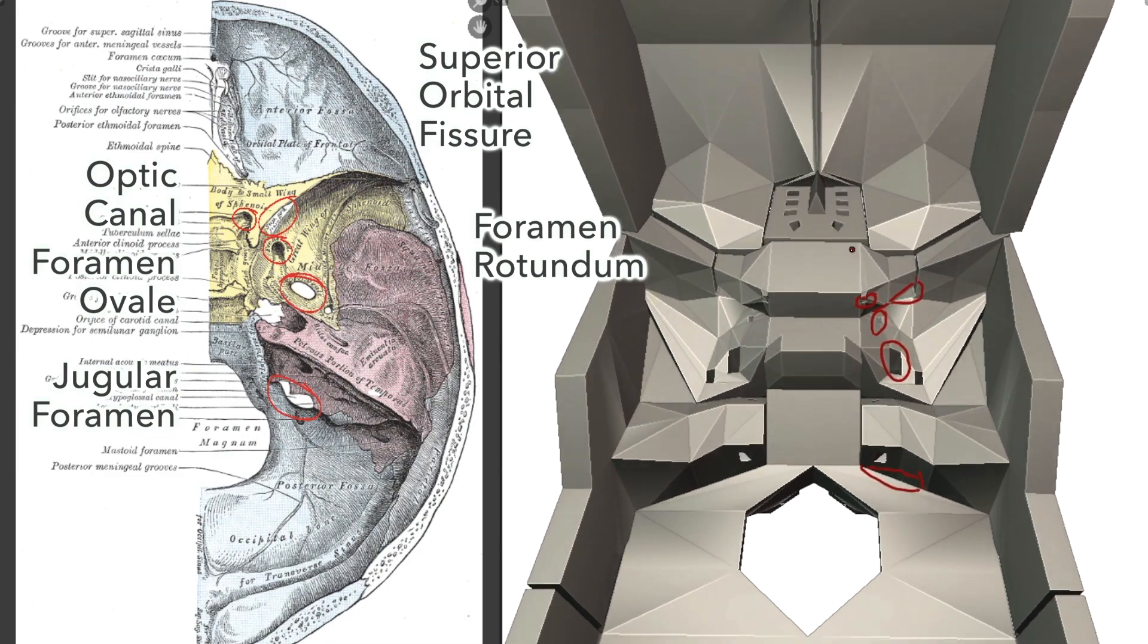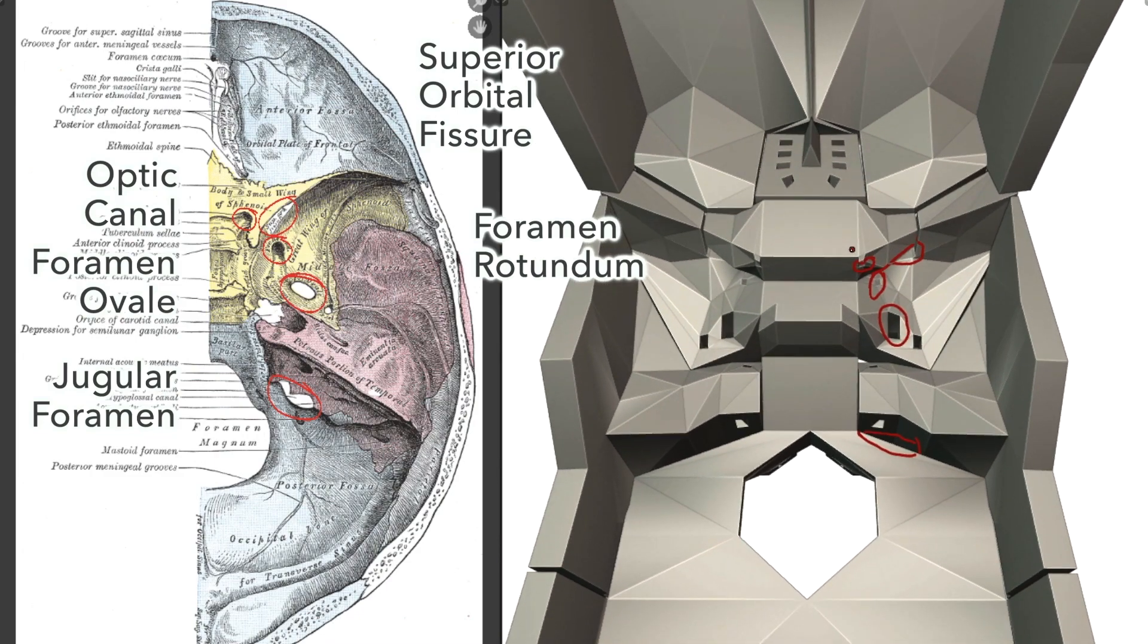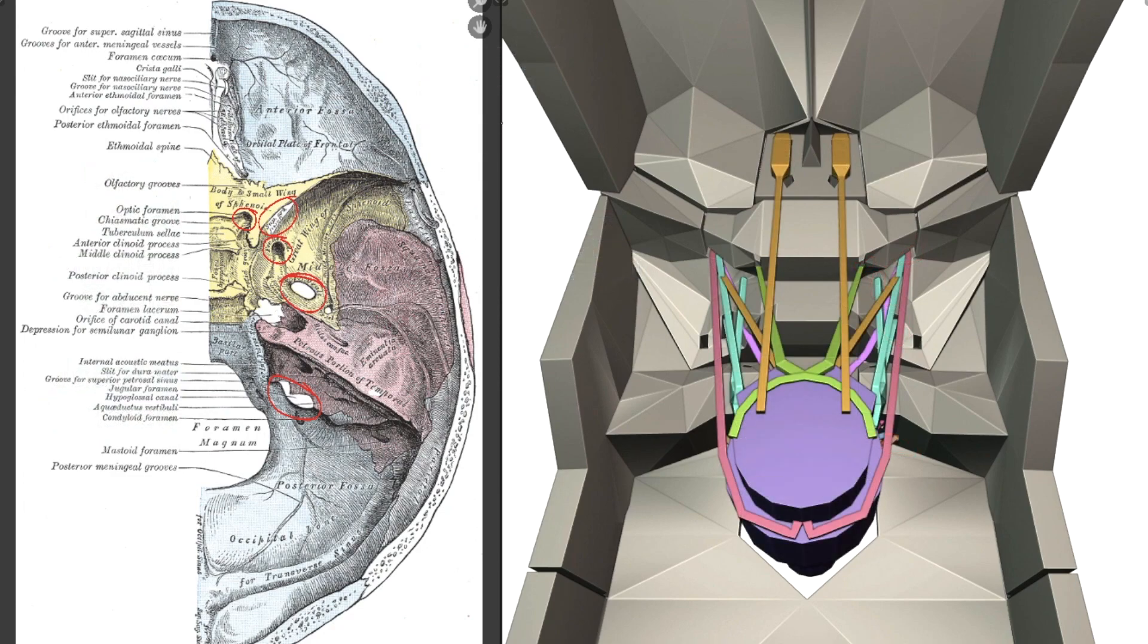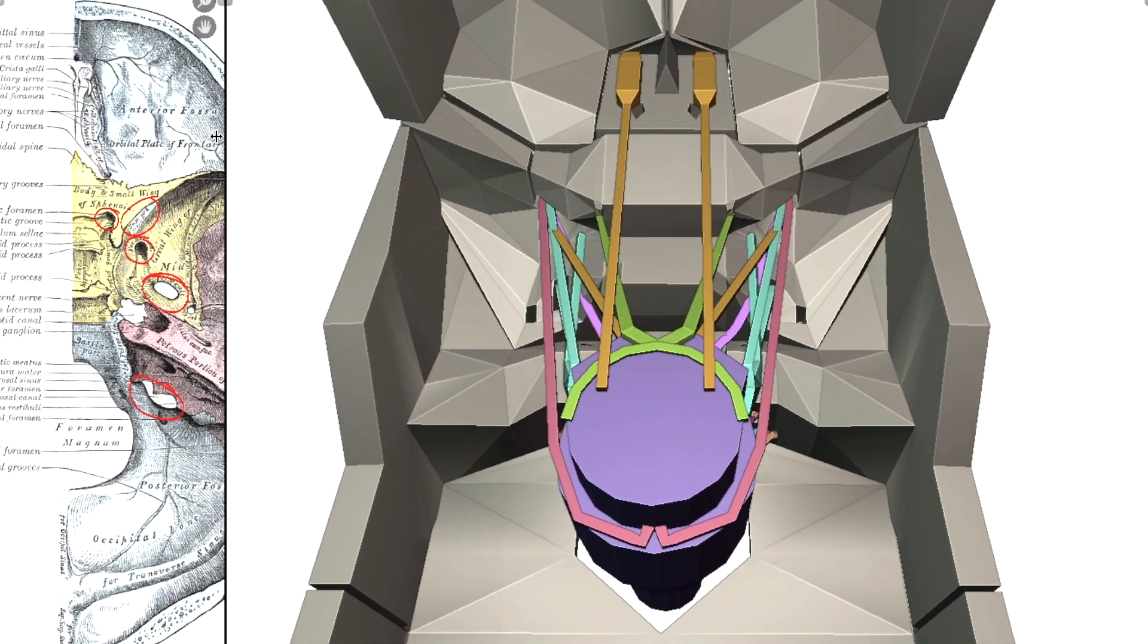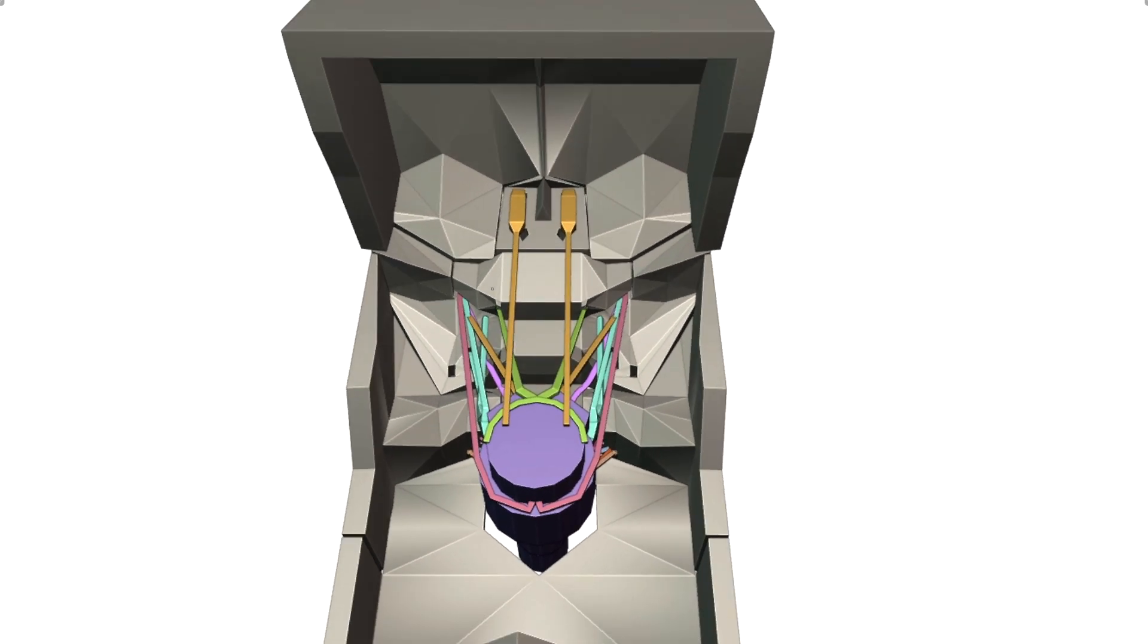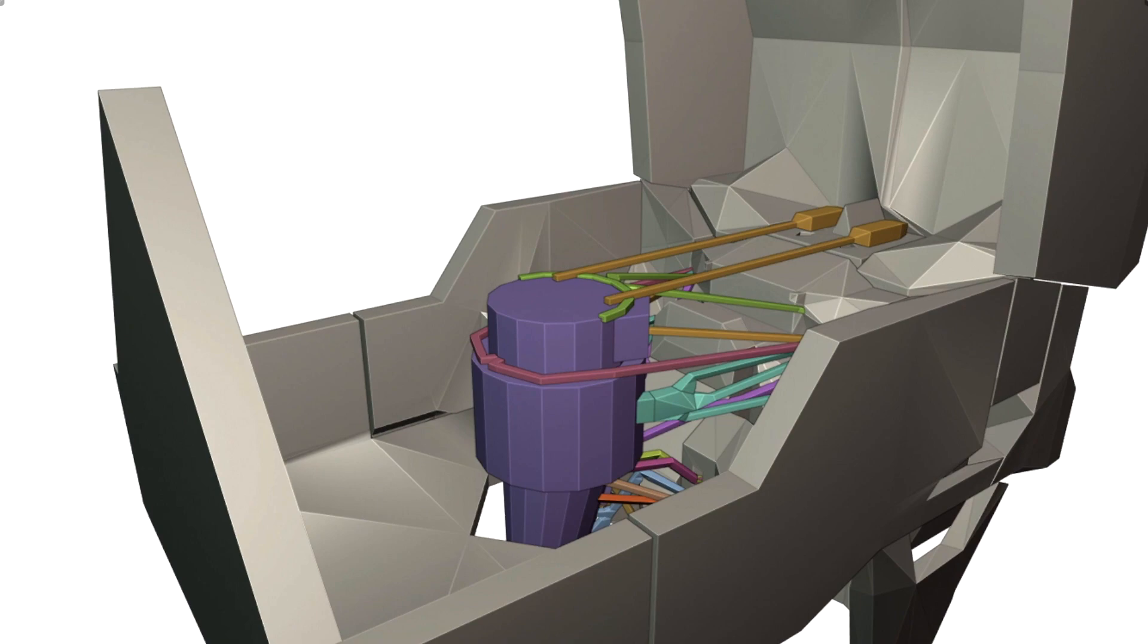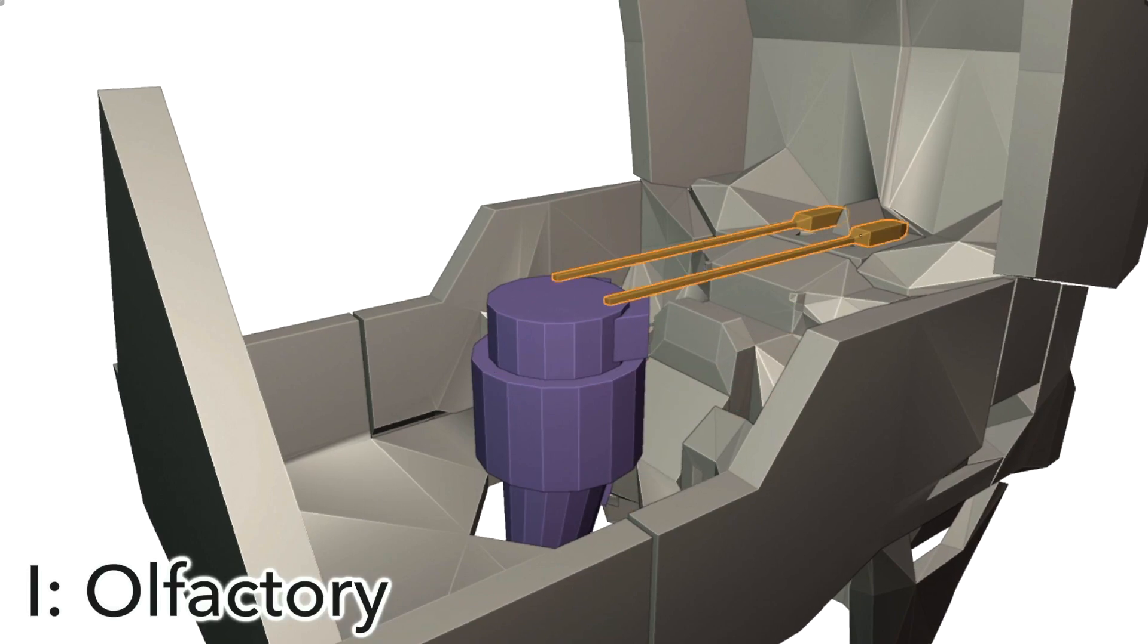Hopefully, this simplified 3D model will help you to get your head around where the cranial nerves fit into the skull. The anatomy of the cranial nerves will be our main focus in this video, and we'll also make brief mention to their functions along the way. Let's get rid of all but our first cranial nerve, the olfactory nerve.